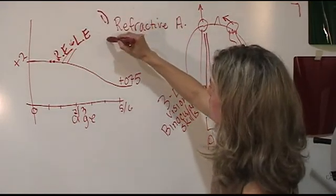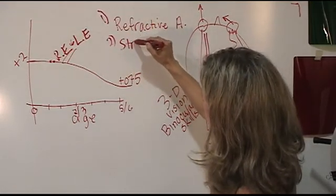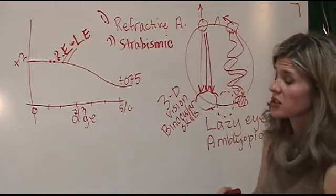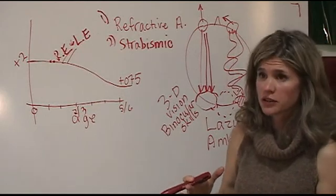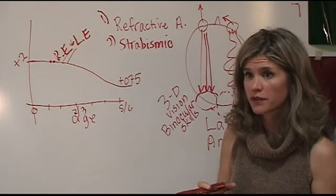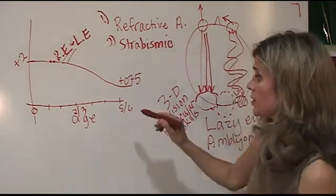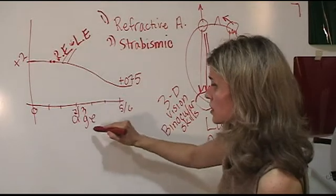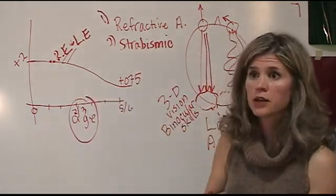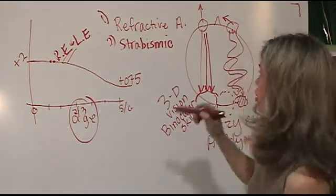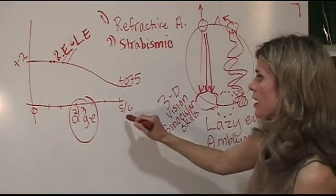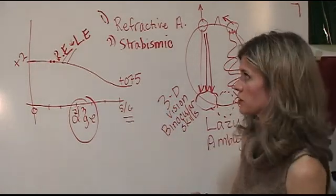So we talked about refractive — the second cause is strabismic, which is an eye turn. I actually really love it when a kid comes in with an eye turn because at least there's an obvious cause. I generally see those kids younger, and the younger you see them — around age 2 or 3 — you can fix it. You can put glasses on them, solve the problem, and it's almost like the faulty wiring never happened. But when you see them after age 5 or 6, it gets a lot more difficult to treat.